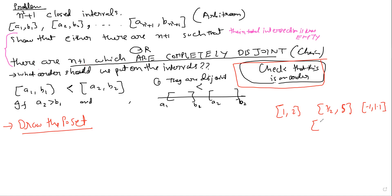Let me give you one more problem before we finish. Here we have MN+1 integers. Set of MN+1 positive integers. Prove that either there exist M+1 of them such that no one divides the other — for example, four, six, ten don't divide each other — or there exist N+1 of them forming a chain where one divides the next. Just the kind of opposing statement we have been looking at.